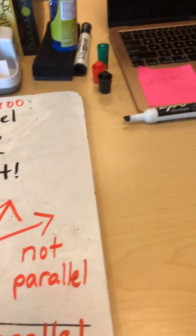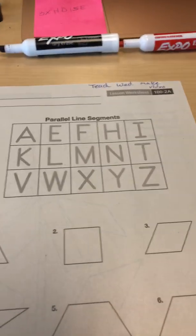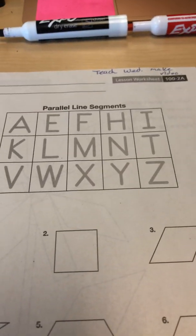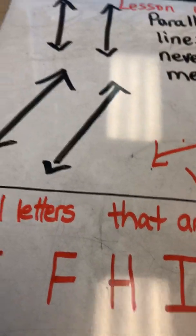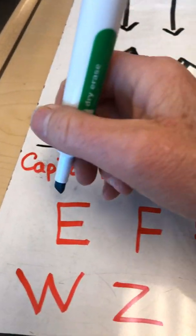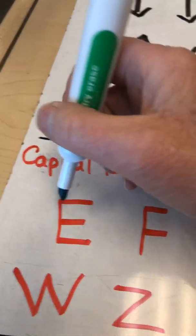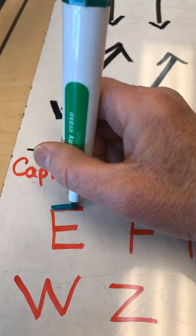So on this part of your assignment yesterday about the letters, they want you to color the capital letters that are parallel. So here is explaining that these letters are parallel. I'm going to draw over the letter E and show you what letters don't touch.